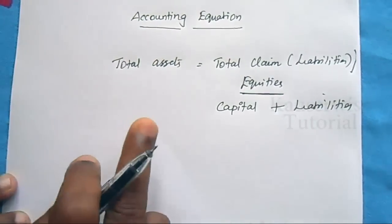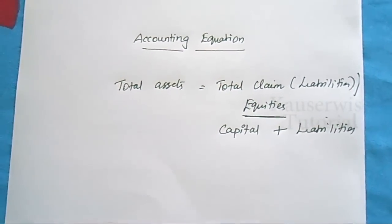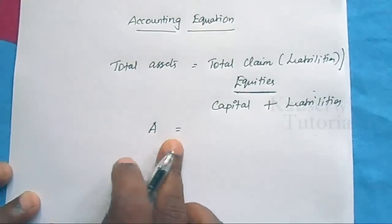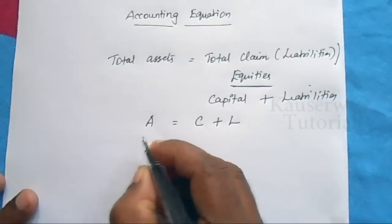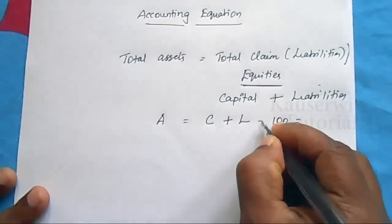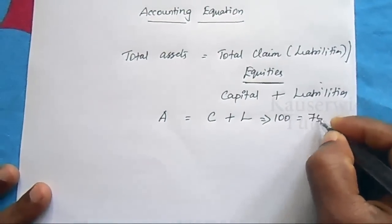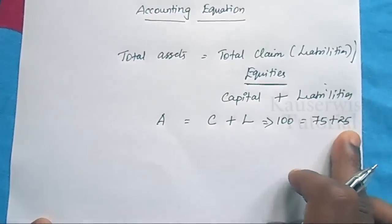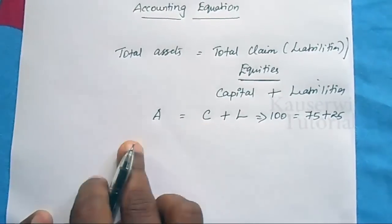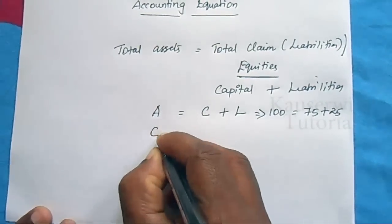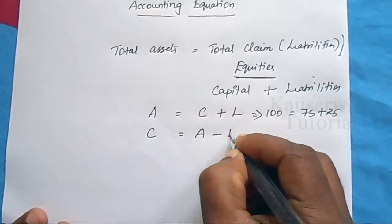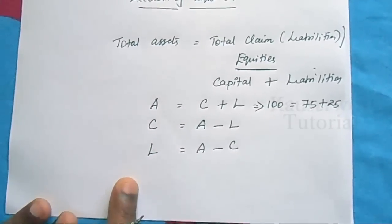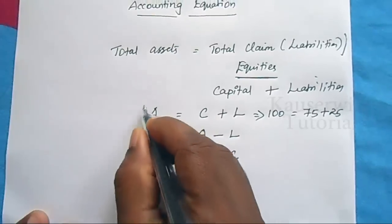Now I am going to explain how this accounting equation is true in all cases. Total asset is equal to capital plus liability. 'A' denotes asset, equal to capital plus liability. For example, total asset is 100 rupees. Total asset 100 rupees equals capital 75 plus external liability 25 rupees. Total equity equals total asset. You can find capital and liability as missing values. Capital equals total asset minus liability (100 minus 25 = 75). Liability equals total asset minus capital (100 minus 75 = 25).